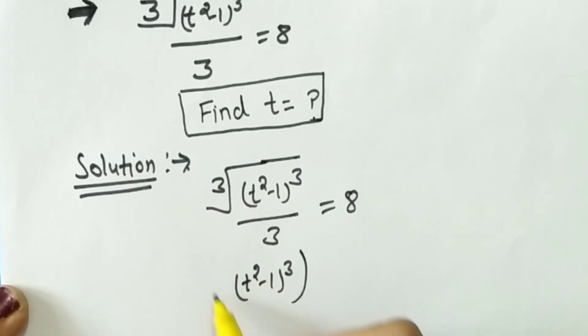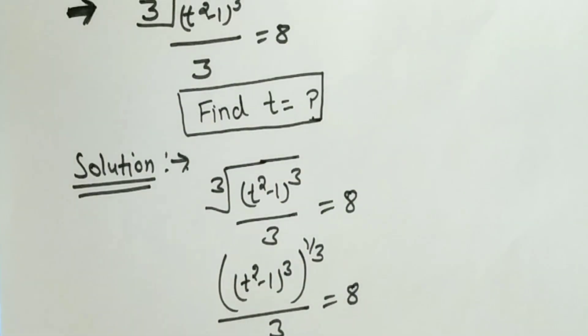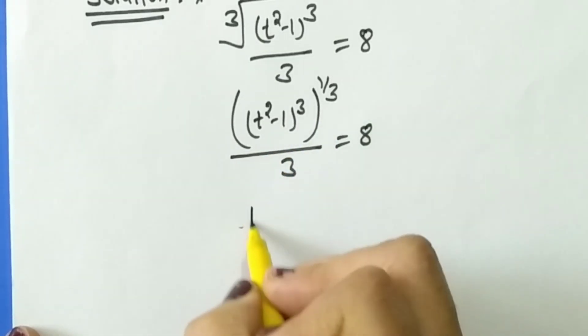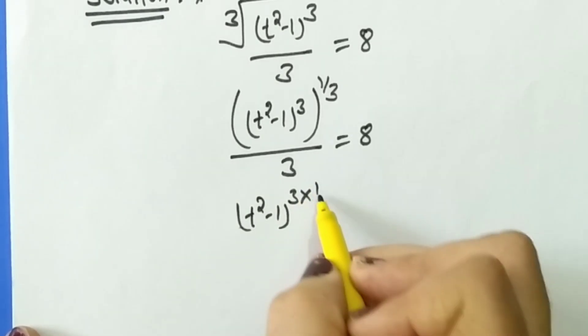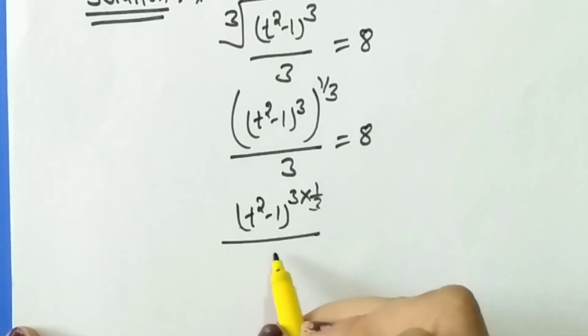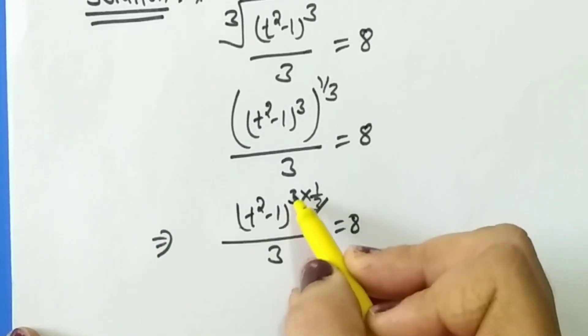Now (t² - 1) raised to power 3 multiplied by 1/3 upon 3 equals 8. Now we cancel this 3 by this, and in the next line (t² - 1) upon 3 equals 8.